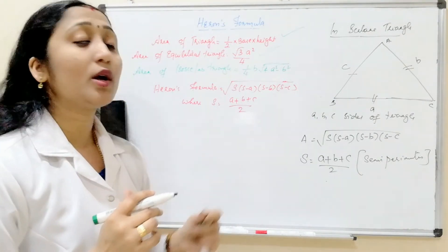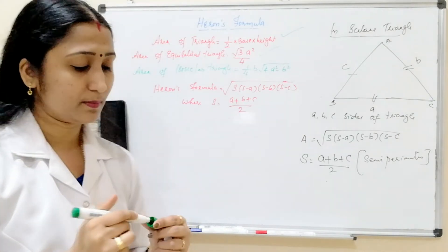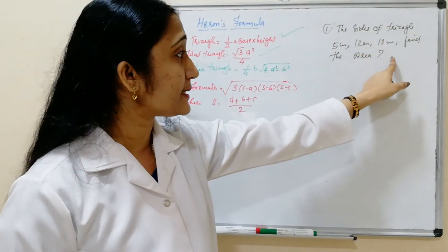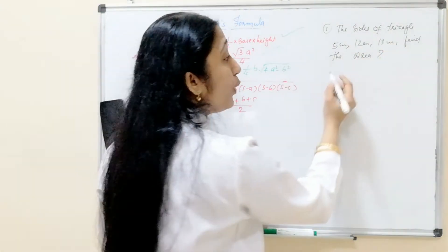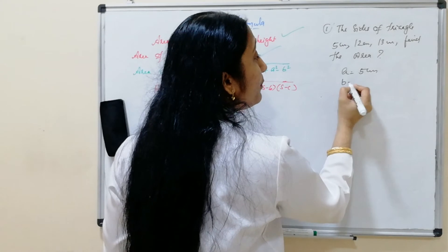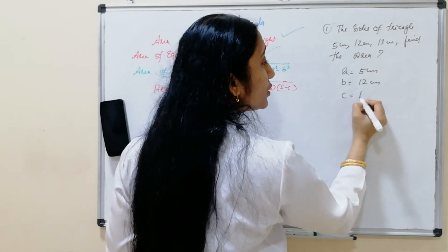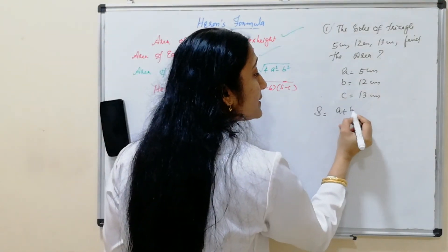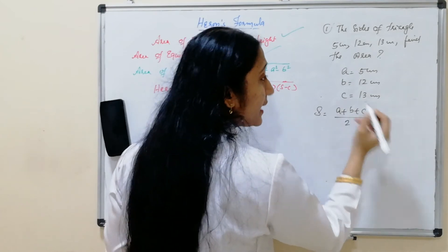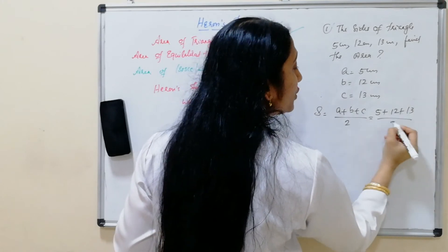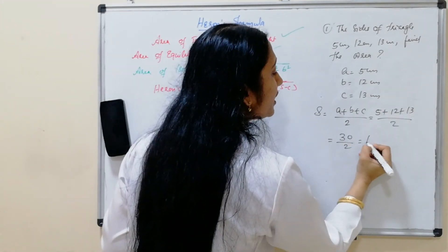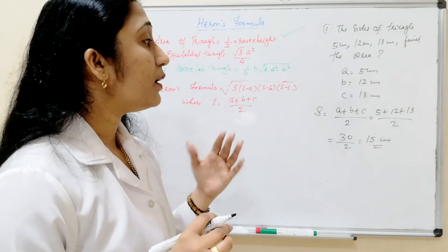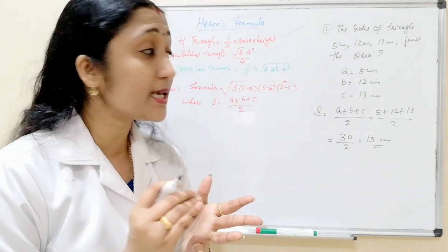Let us do one problem based on Heron's formula. A simple problem: the sides of the triangle are 5 cm, 12 cm, and 13 cm. Find the area. Given: a equals 5 cm, b equals 12 cm, and c equals 13 cm. First, we find the semi-perimeter: s equals (a plus b plus c) by 2, which is (5 plus 12 plus 13) by 2, equal to 30 by 2, equal to 15 cm.